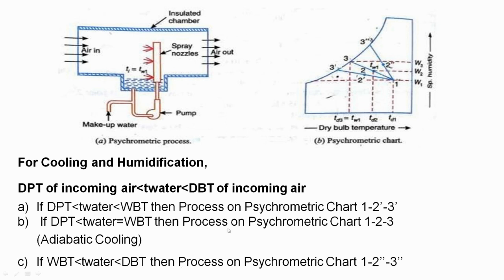On the psychrometric chart, we can see three processes drawn: one–two, one dash–two dash–three dash, and one double-dash–two double-dash–three double-dash. All three processes are examples of cooling and humidification, but the lines are different. We will now see the difference between them.